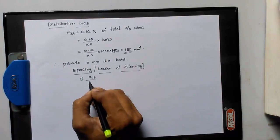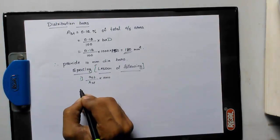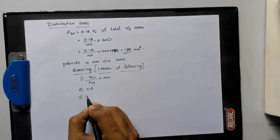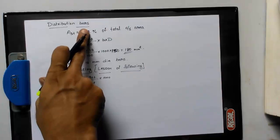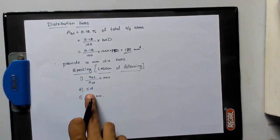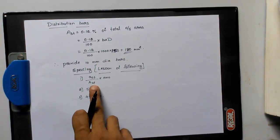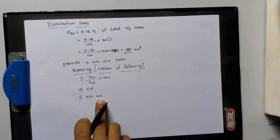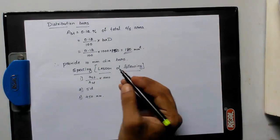For main reinforcement we assume 12 mm dia bars. For distribution bars we assume less than that, that is 10 mm dia bars. Therefore, spacing lesser of following: for distribution bars, first formula is same small ast by capital AST into 1000, second one is 5d, and third one is 450 mm.